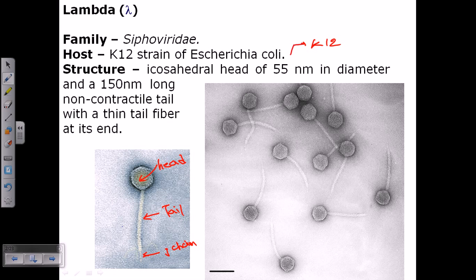If I draw it schematically, how it will be represented - it will look like this. The J chain will look like this, and then the icosahedral head will be aligned like that. So that's how lambda actually looks.